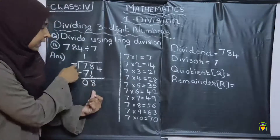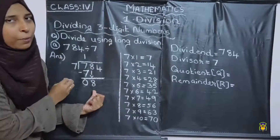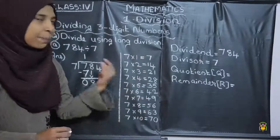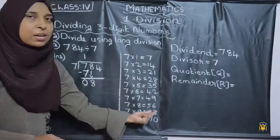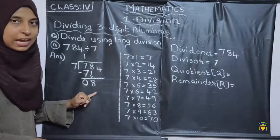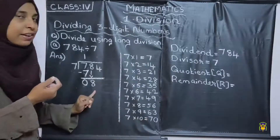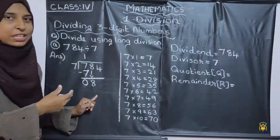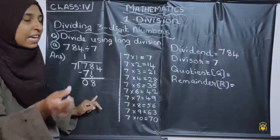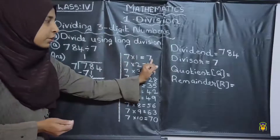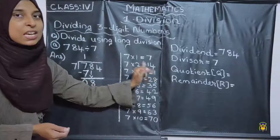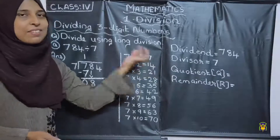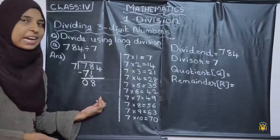8 is greater than the divisor, so no problem, we can divide. Then check whether we are getting 8 as the product in the multiplication table of 7. No, it is not a product. So next, we want to check in the multiplication table whether we are getting the product which is just nearer to 8 and less than 8. Here, 7 into 1 is equal to 7. 7 into 2 is equal to 14, which is greater than 8, so it is not possible to take 14. So we want to take 7 into 1 equals 7 — it is less than 8 and nearer to 8.